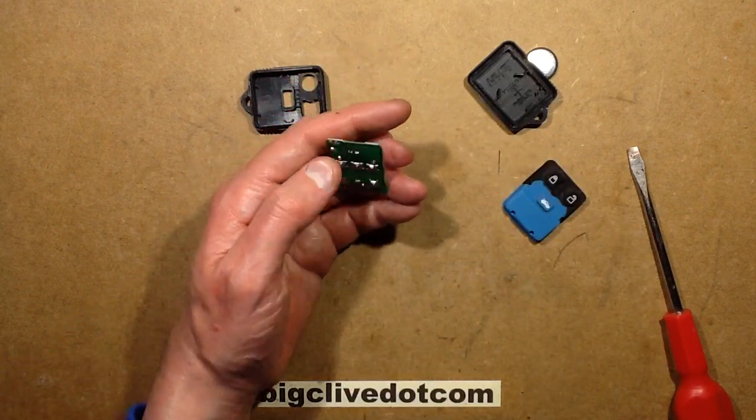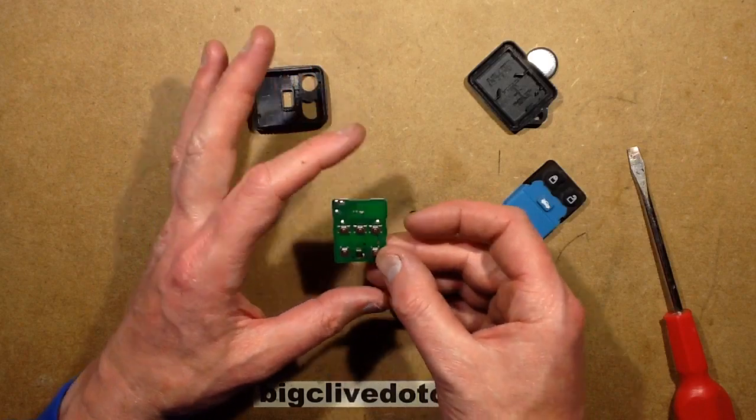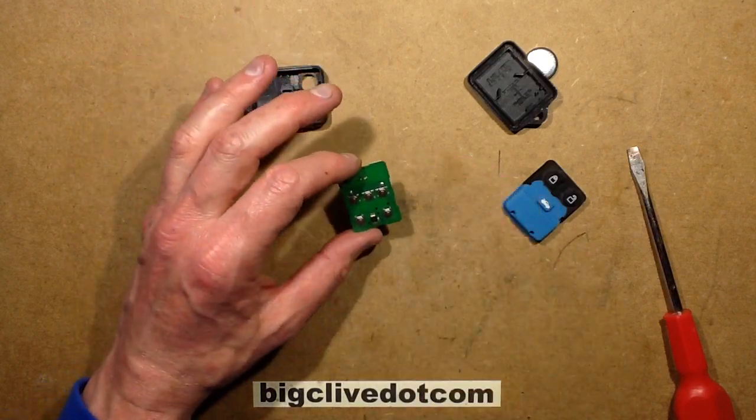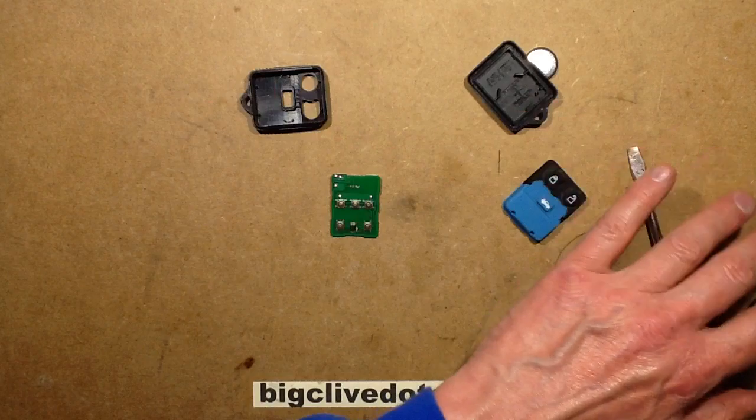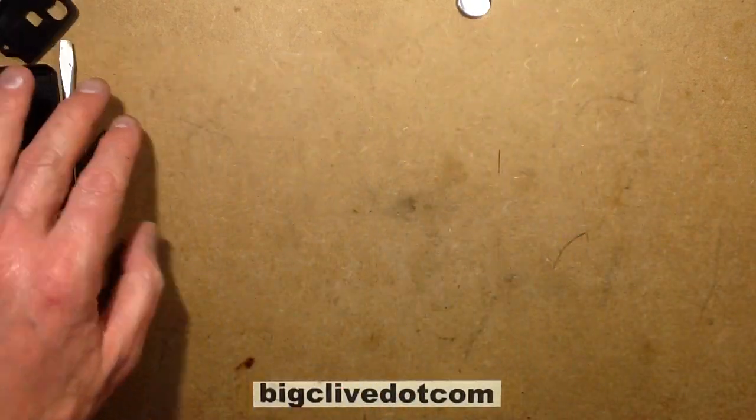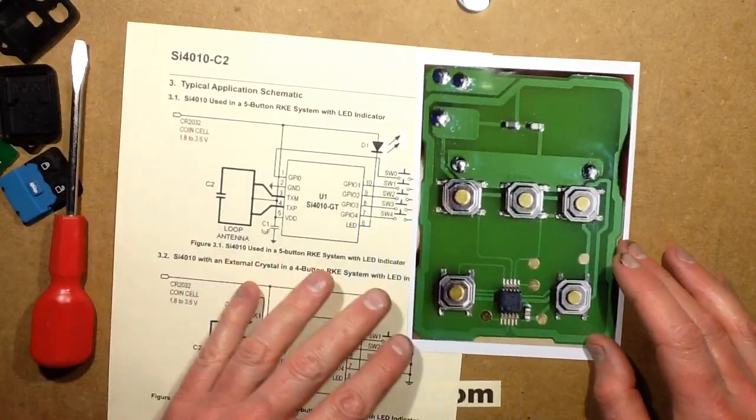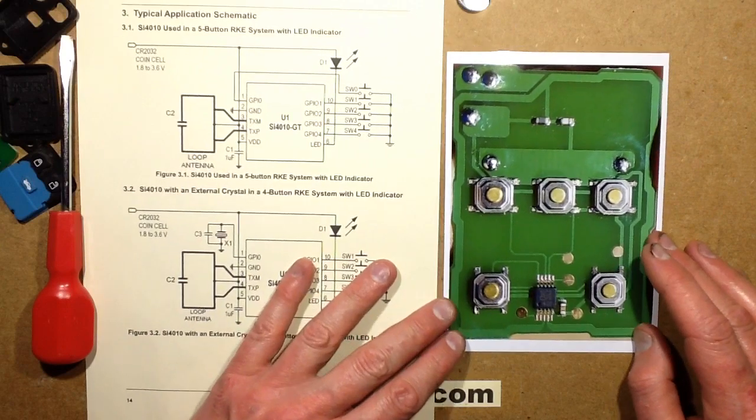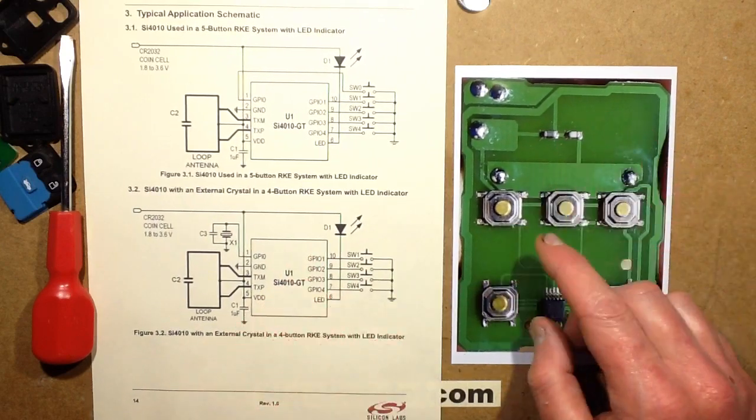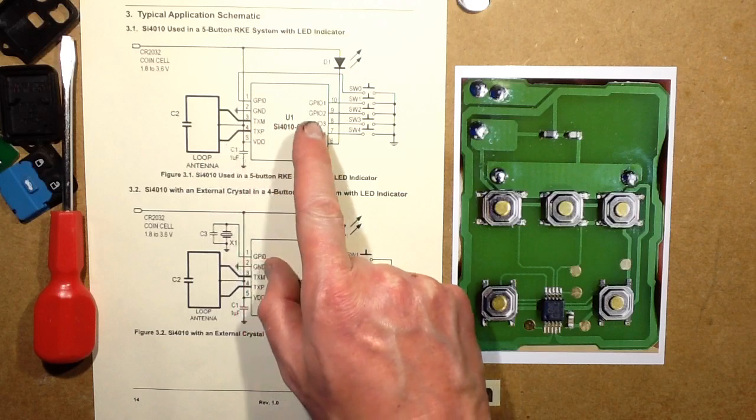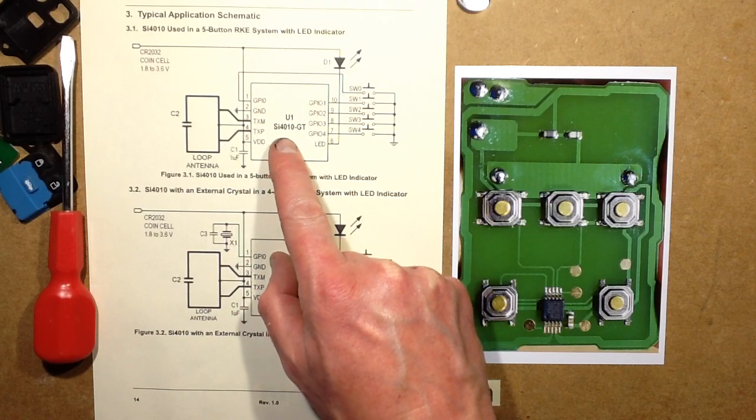And I really struggled to find it online until I found, well, let's bring in, this is what, I should have done this earlier on. I should have brought in this, which is a blow-up image of the chip itself, the key fob. The nearest I could find was this chip called the SI4010.